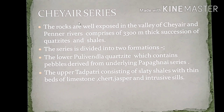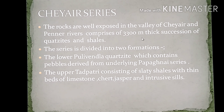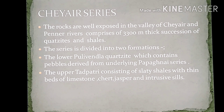The Cheyair series — rocks are well exposed in the valley of Cheyair and Pennar river — comprises a 3300 meter thick succession of quartzites and shales. The series is divided into two formations: the lower Pulivendala Quartzite, which contains pebbles derived from the underlying Papagani series, and the upper Tadipatri, which consists of slaty shales with thin beds of limestone, chert, jasper, and intrusive sills.